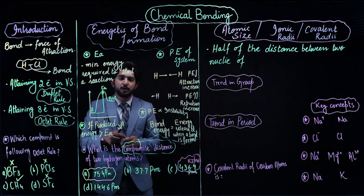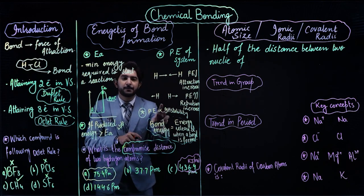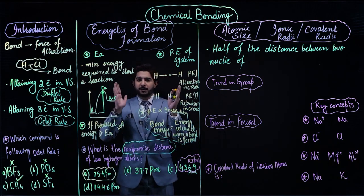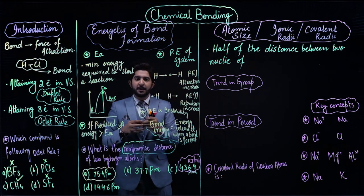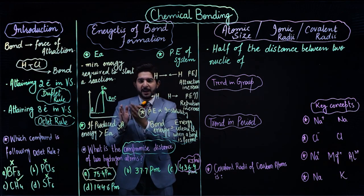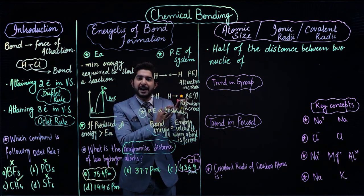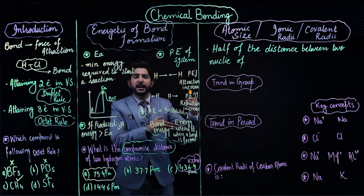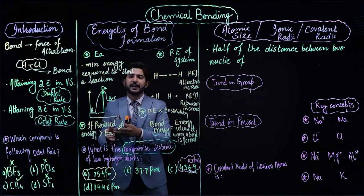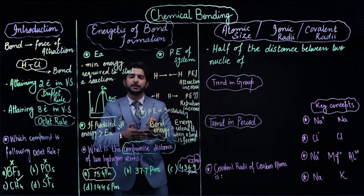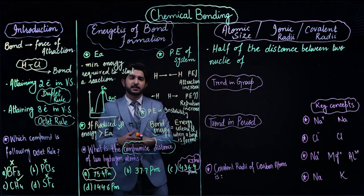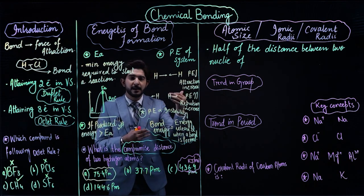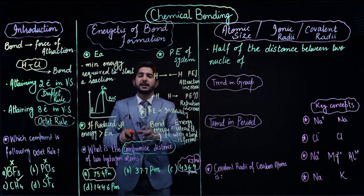This is the concept of bond energy. To summarize energetics of bond formation: when a bond forms between two atoms, energy is released. Bond breakage is an endothermic process — energy is absorbed. If energy produced during collision is greater than activation energy, it is an effective collision giving products. If potential energy of the system decreases, stability increases — that is the crux of energetics of bond formation.